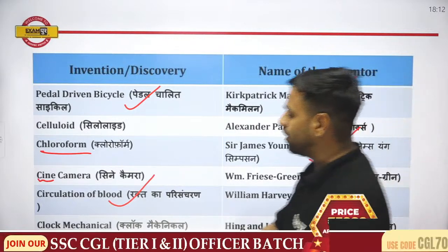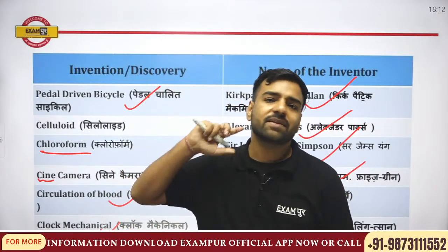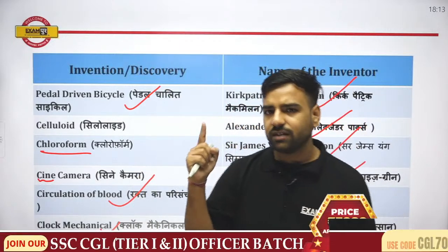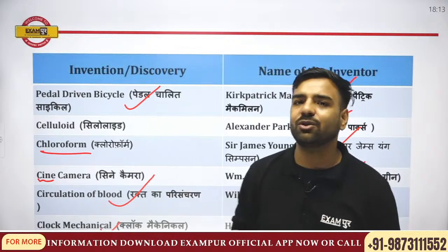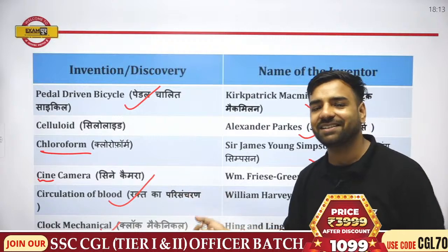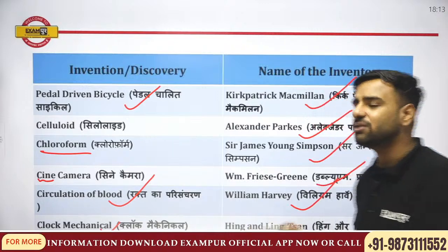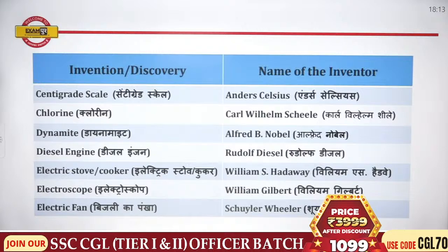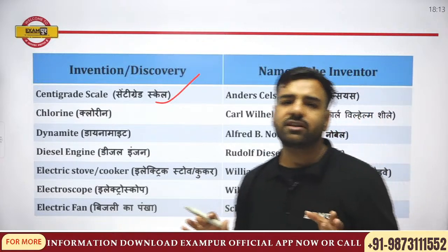Talking about the mechanical clock — it makes a tick-tick sound. From that tick-tick sound you can link the names Hing Ling. So Hing Ling Sen were the ones who discovered the mechanical clock. Next, the centigrade scale was discovered by Anders Celsius — from the name itself it is clear.